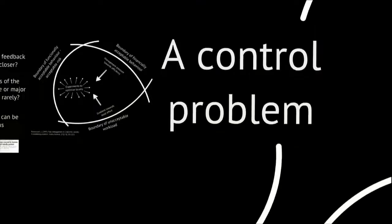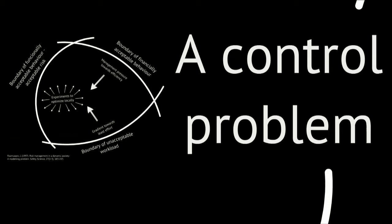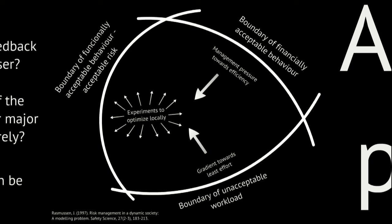So that's about the path dependency of risk — the importance of considering history when discussing risk in web operations. We will also look at risk as a control problem, where you try to constantly experiment to optimize locally in a highly goal-constrained environment, which is what this model by Jens Rasmussen tries to illustrate. A goal-constrained environment where you are not to cross the boundary of financially acceptable behavior — because that's when you get bankrupt — where you are not to cross the boundary of unacceptable workload because you're burned out, and where you are not to cross the boundary of functionally acceptable behavior, or acceptable risk, because that's when you have an outage. And importantly, the only way you can get definitive feedback on where any of these boundaries is, is by crossing it.